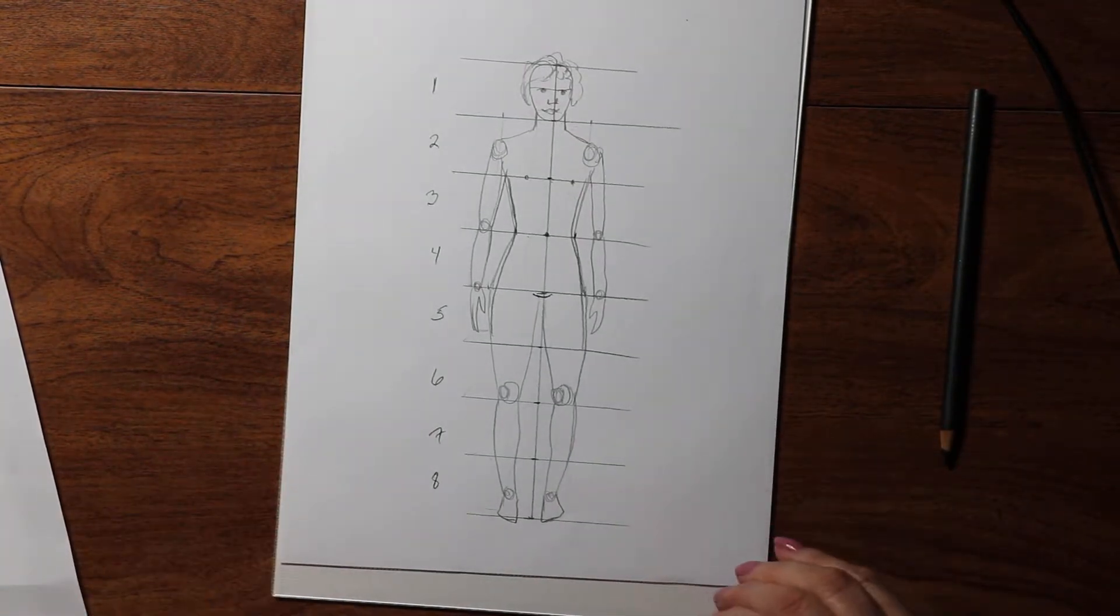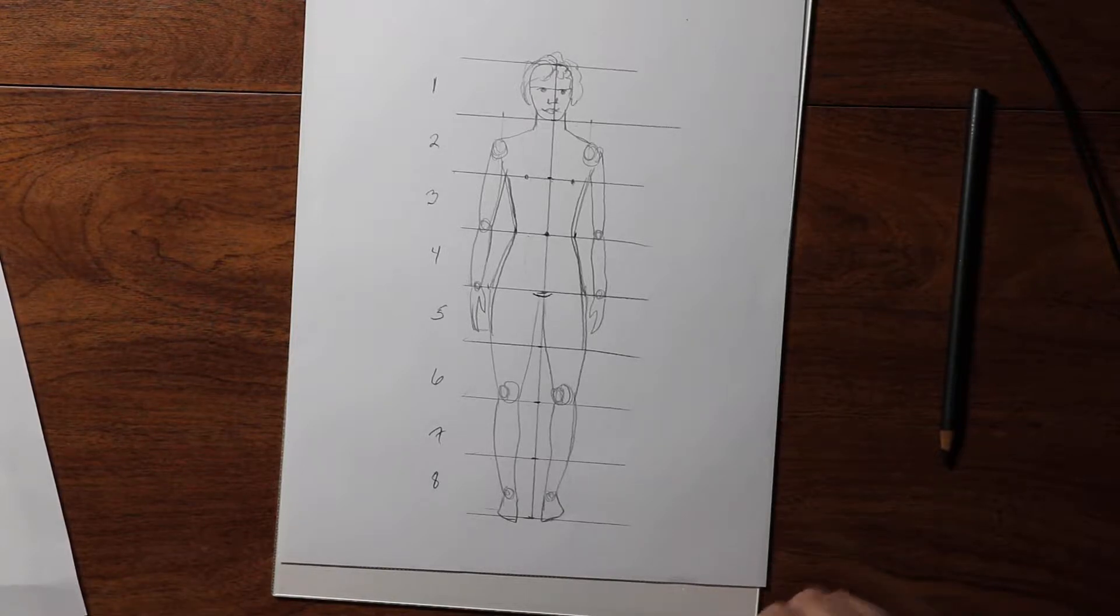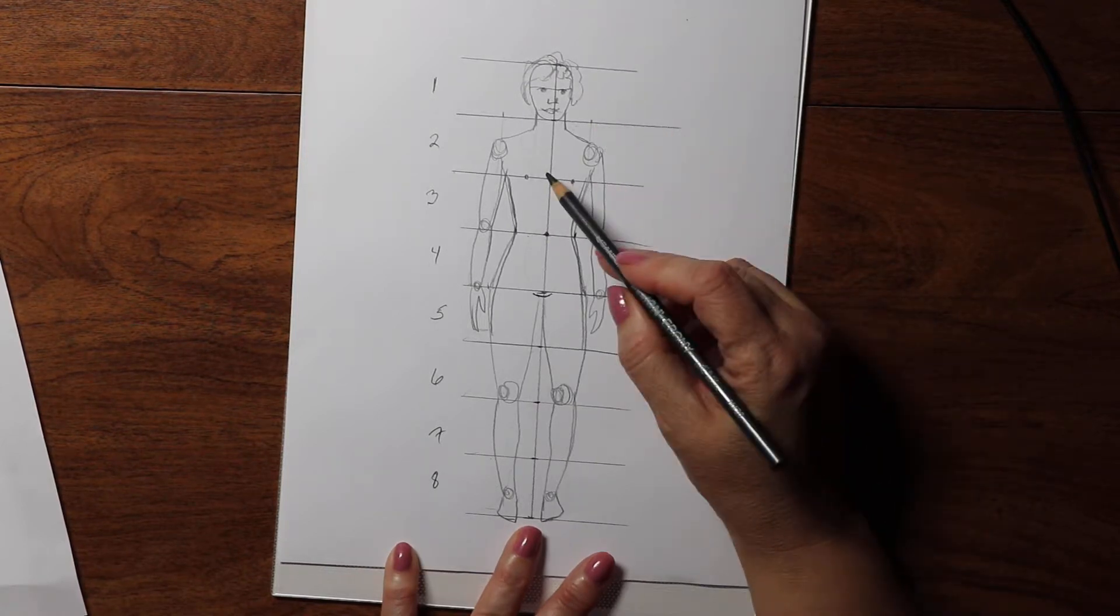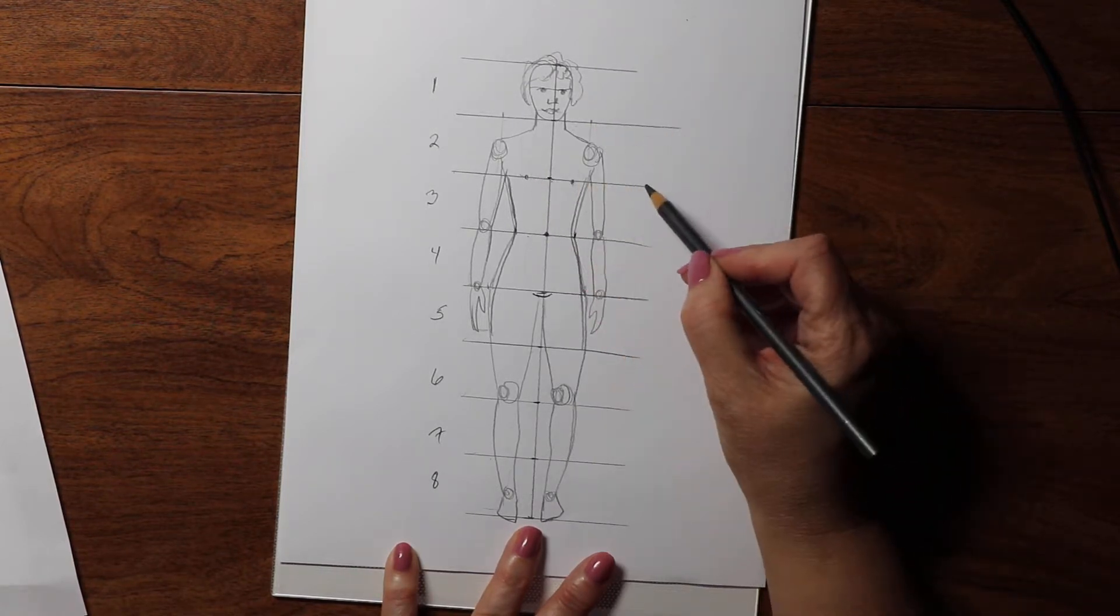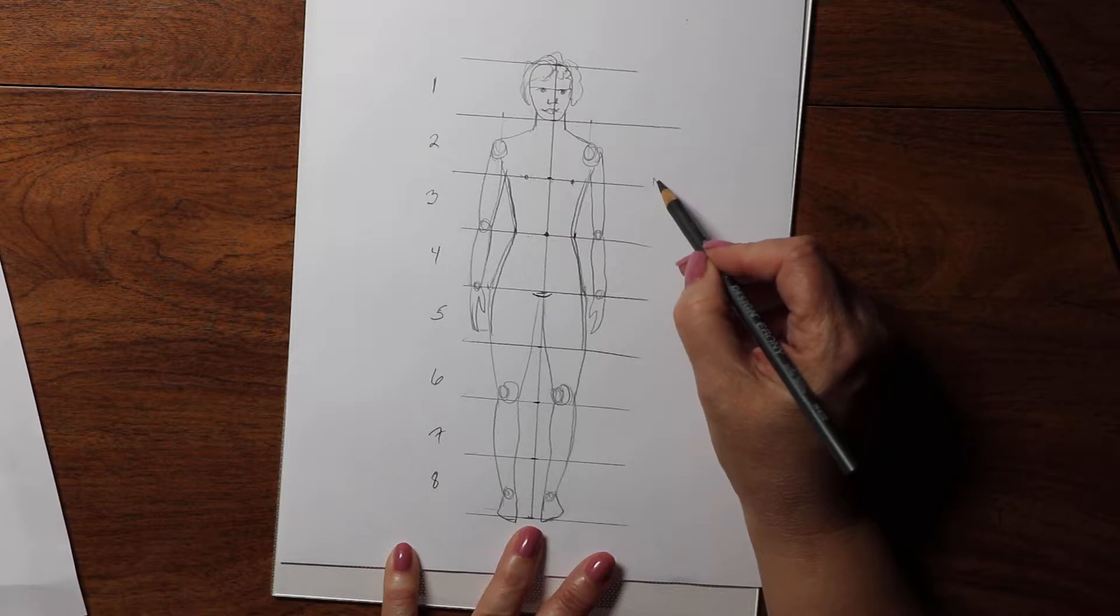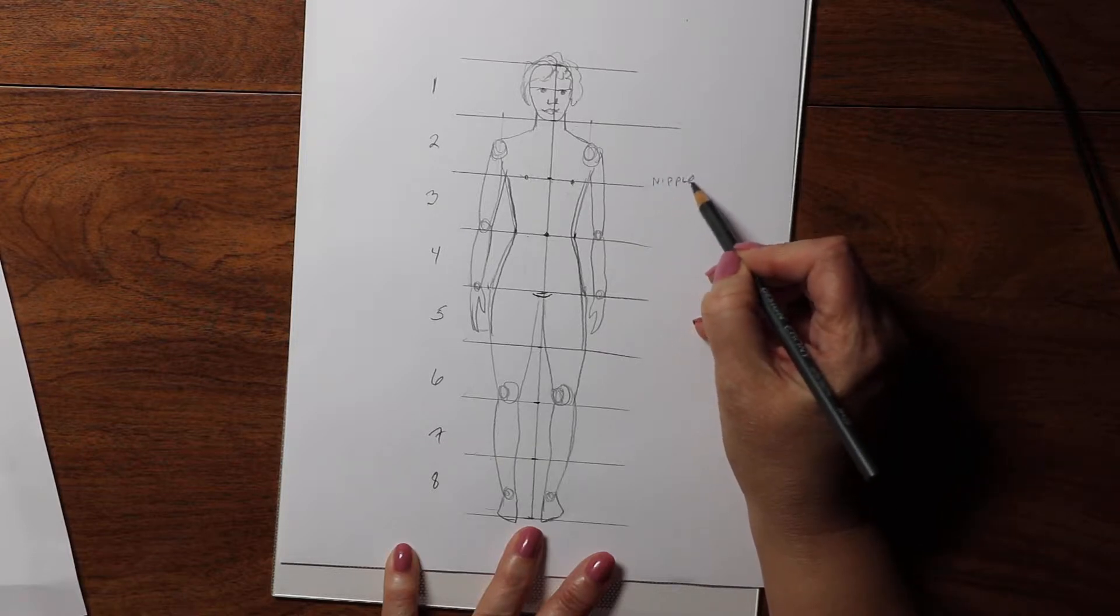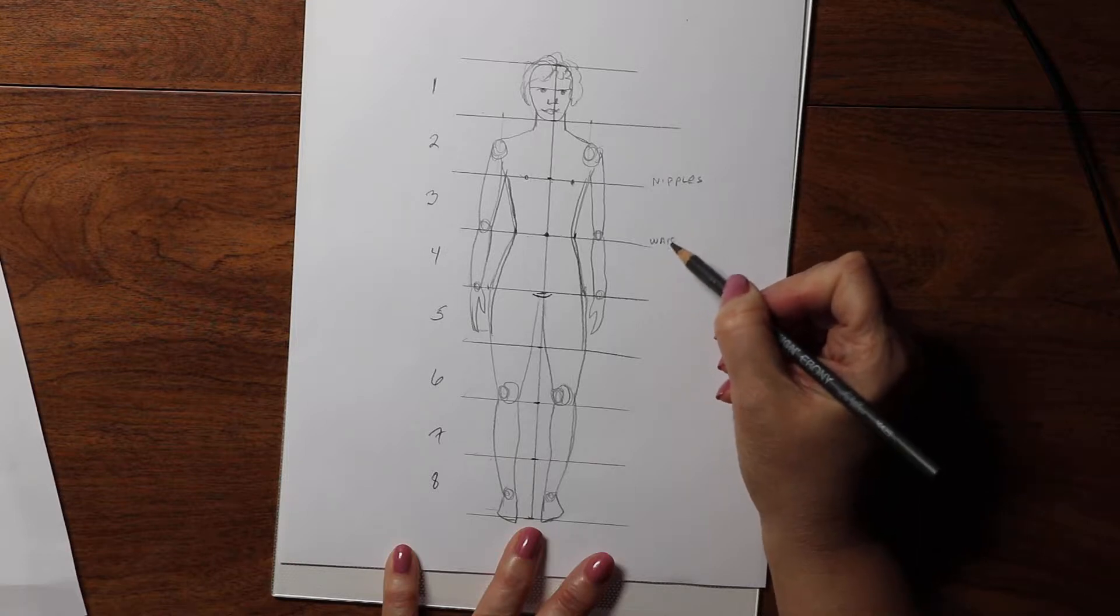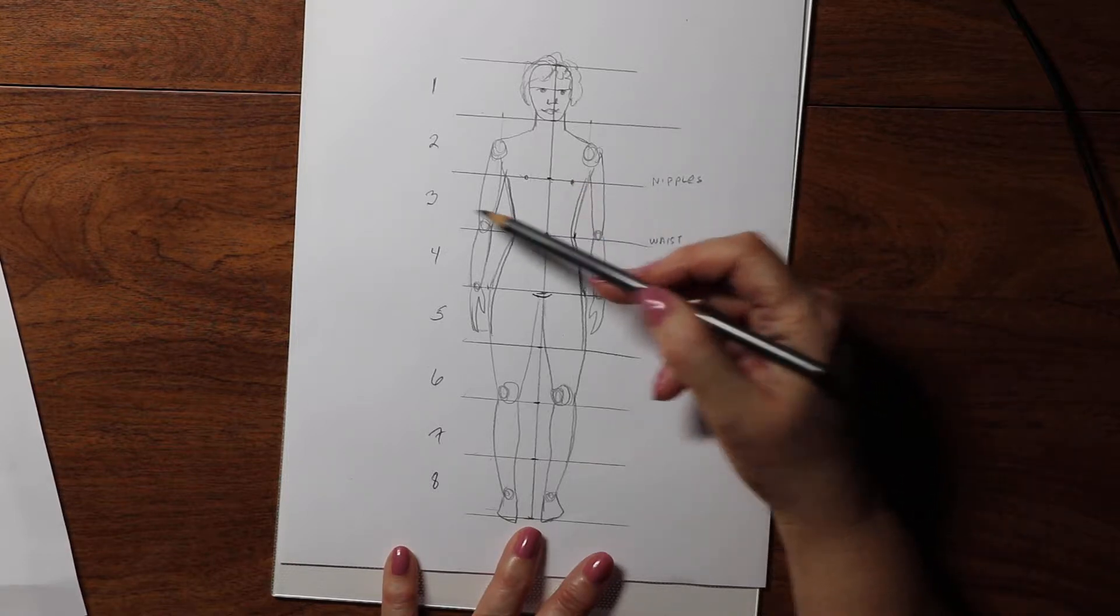And that is the eight head figure. So key things to know is that the bust or the nipples are at the bottom of the two head. The waist or the belly button is at the bottom of the three head.